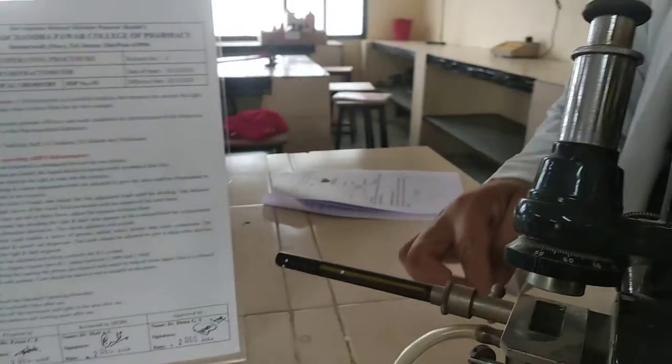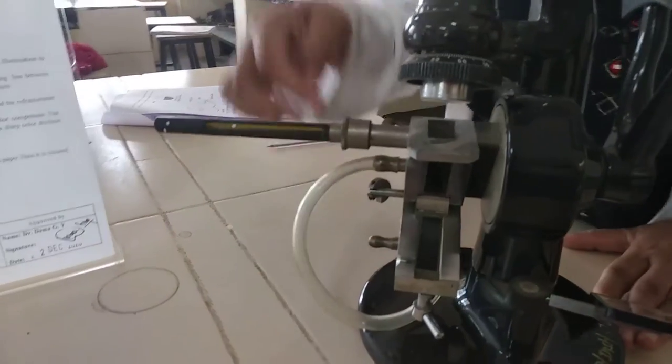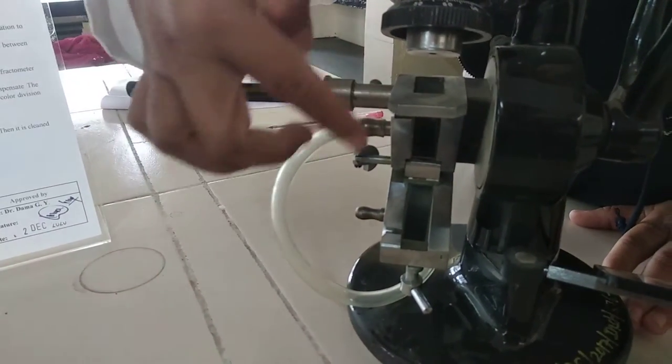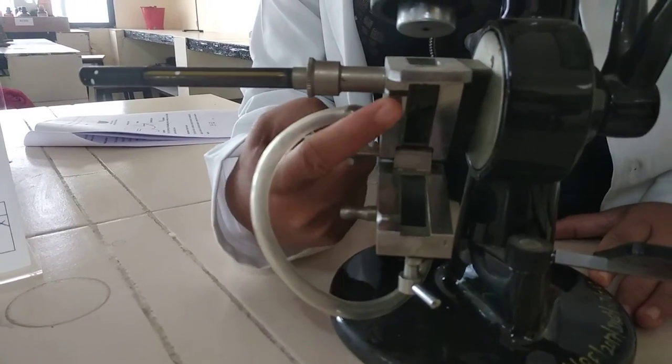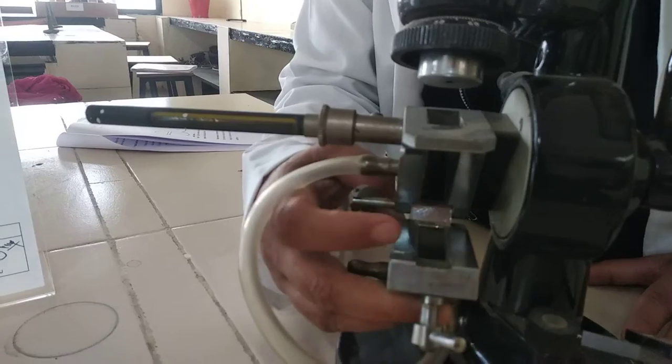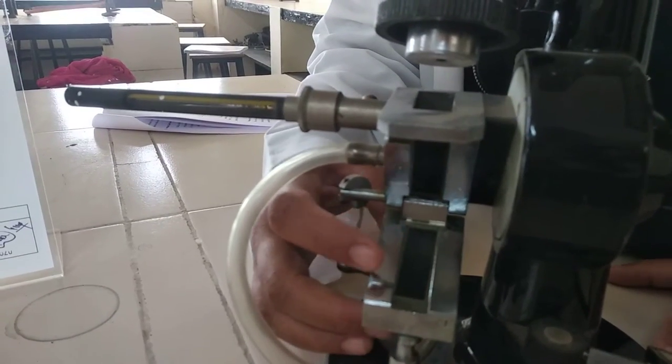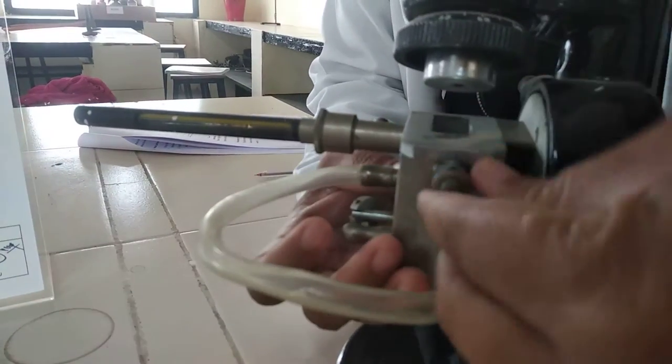First I will introduce you to refractive index and parts of the refractometer. It contains prisms, there are two prisms. This one is the first prism and second prism. Here in the first prism surface, we will apply our sample. Afterwards we can close this.